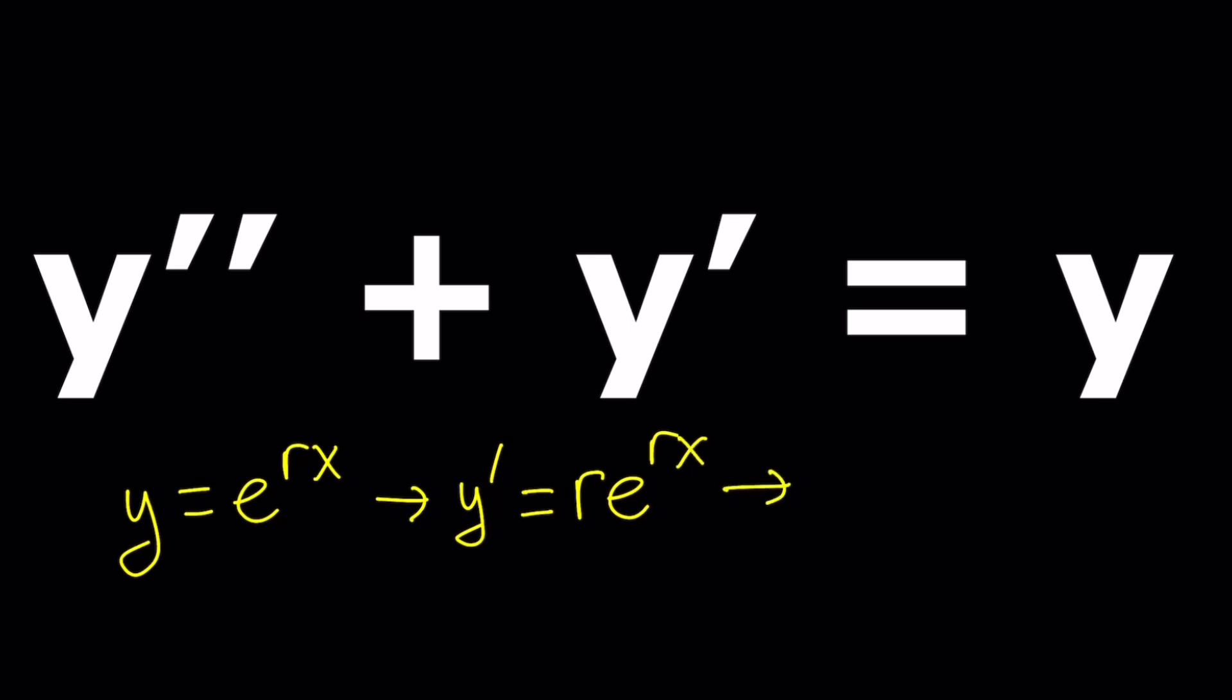And if you differentiate this one more time, notice that the constant in the front is just going to stay the same. So you're going to be differentiating e to the rx and then just multiply by r, which is going to give you the second derivative as r squared e to the power rx.